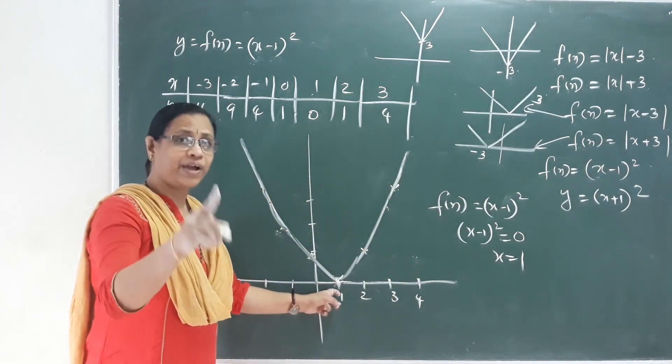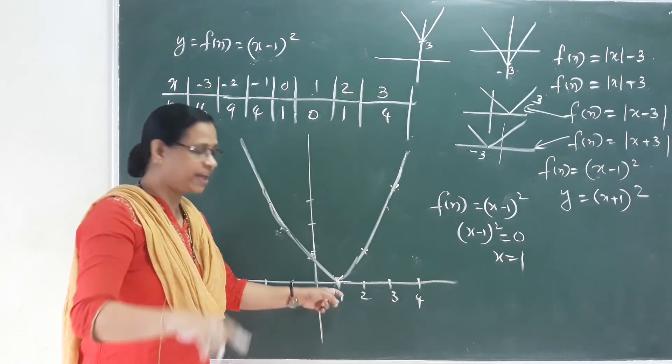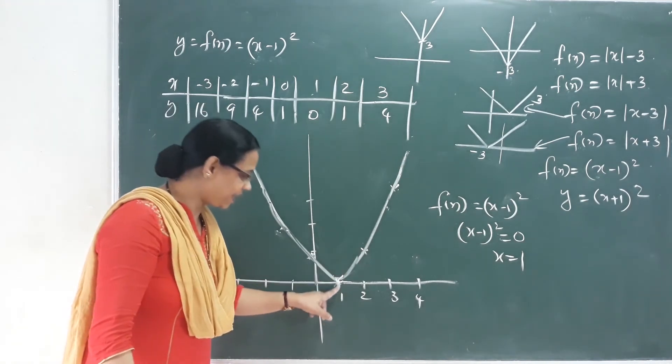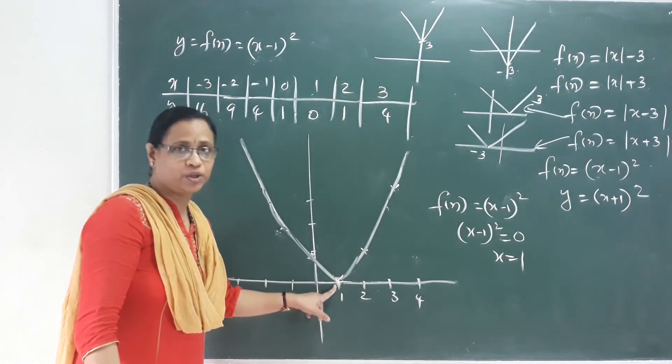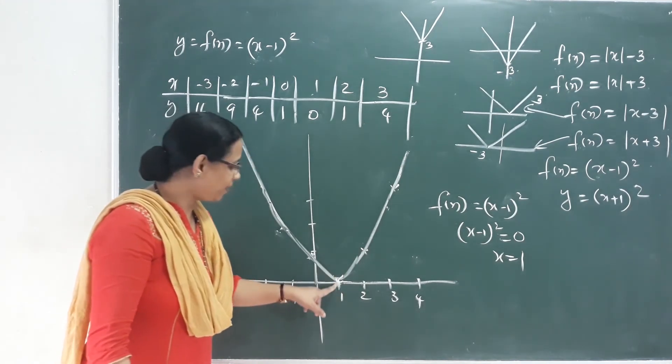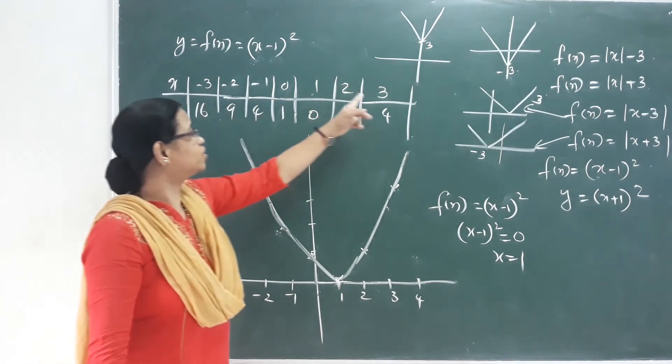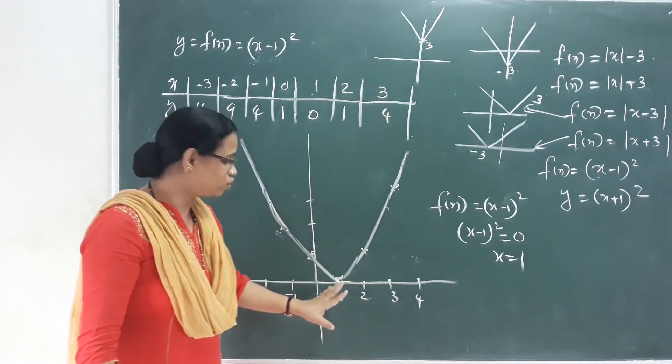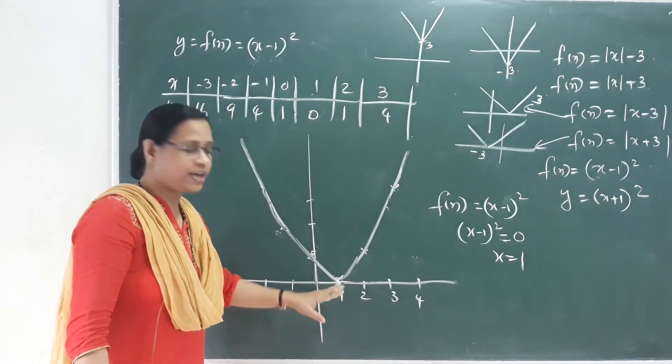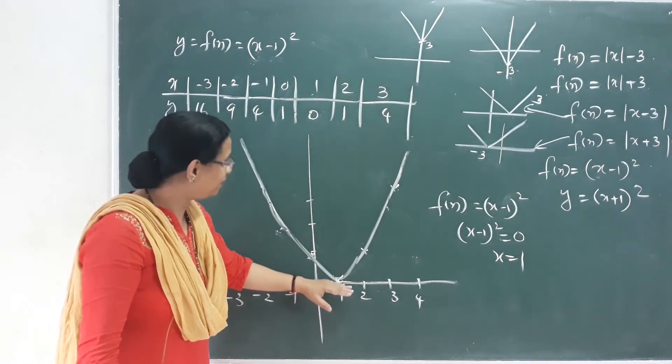That means the value is repeated out — that means x is equal to 1. So if we call this domain, we have all real values. If we call this range, we have values from 0 to positive infinity.